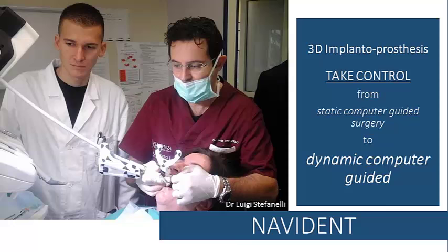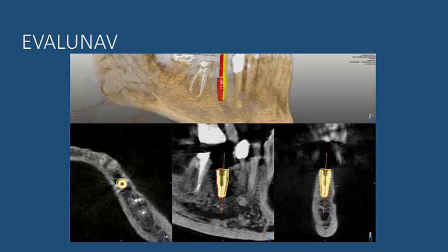In this video we present EvaluNav. EvaluNav belongs to Navident and is a software which allows us to compare what has been executed versus what has been planned, and therefore it quantifies the gap between the two events.